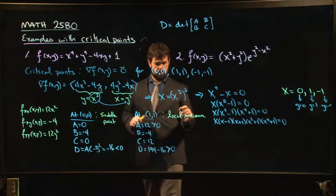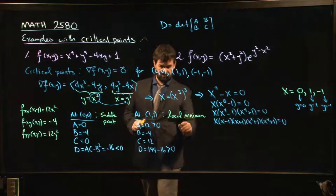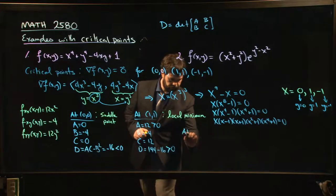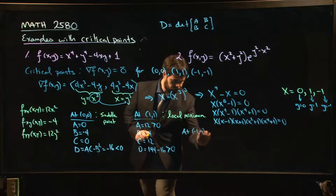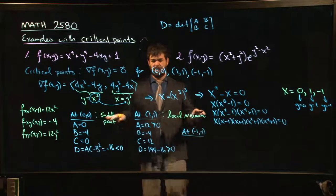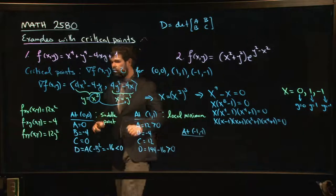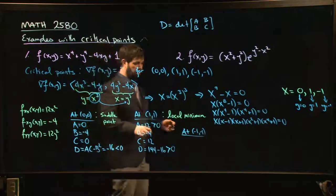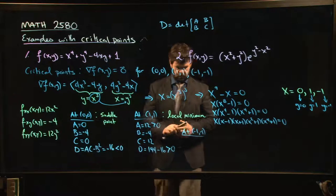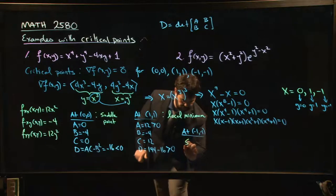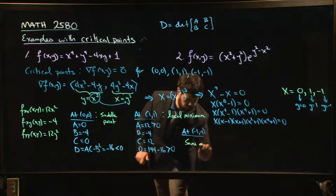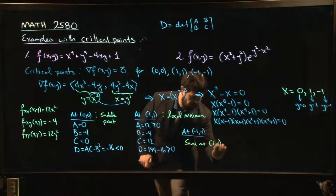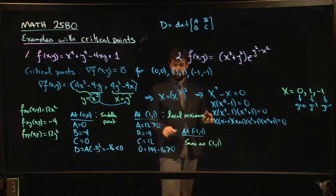What about the last point at (-1,-1)? Well, it's going to be exactly the same, because these are quadratic. If I square -1, I still get +1. So at (-1,-1), it's going to be exactly the same as what we had at (1,1), also a local min.